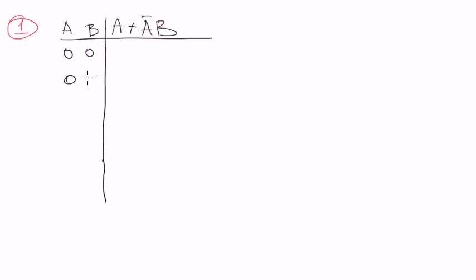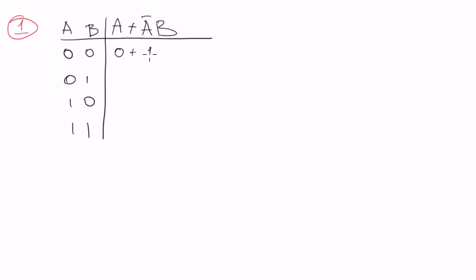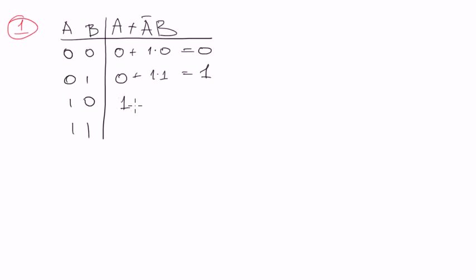Let's write down all the possible combinations of a and b. It will be: 0,0 — 0,1 — 1,0 — 1,1. That's it, not much. So: 0 plus 0-negated (which is 1) multiplied by 0 equals 0. Then 0 plus 1 multiplied by 1 equals 1. Then 1 plus something equals 1. And again 1 plus something equals 1. We did a truth table for this one.